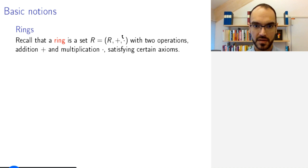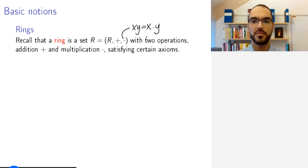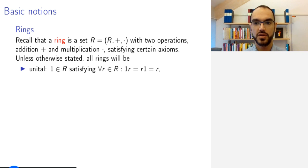Multiplication here I will write using juxtaposition, so instead of this dot whenever we want to write a product we just simply write xy. Now we will not look at arbitrary rings in this course, but we will require them to be unital, meaning that they have a unity element, a neutral element with respect to multiplication that satisfies 1 times r equals r times 1 equals r for all r, and we also require the multiplication to be commutative.